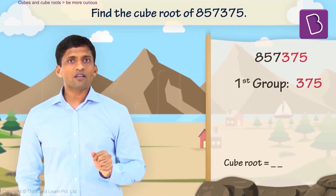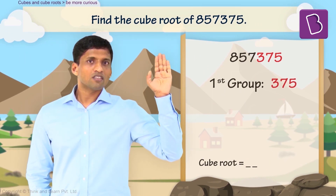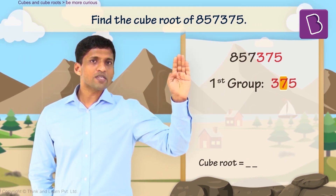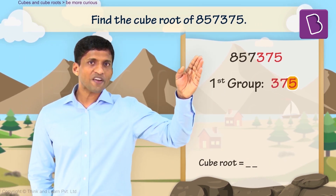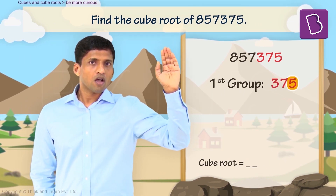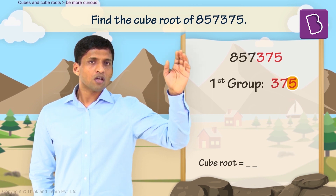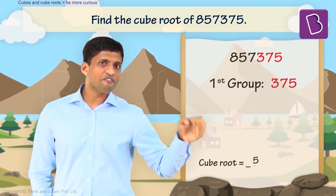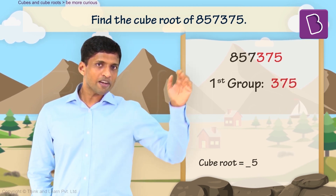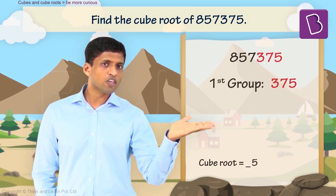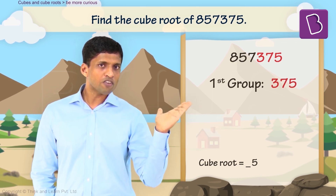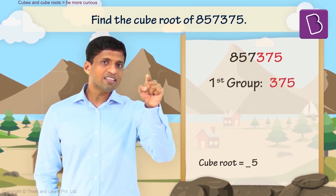Coming back to this particular question: the first group is 375, its unit digit is 5, so the cube root unit digit will be 5. We have already found the unit digit of the cube root, which is 5.